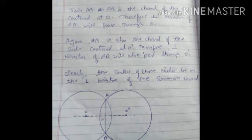Then join AB. AB is the chord of the circle with center O. Therefore the perpendicular bisector of AB will pass through O. Again, AB is also the chord of the circle centered at O', so the perpendicular bisector will also pass through O'. Clearly, the centers of these circles lie on the perpendicular bisector of the common chord.